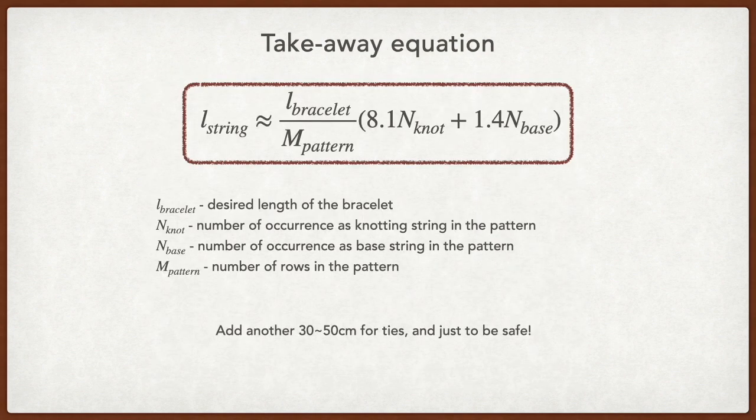To summarize, here I'm writing down the equation takeaway message. The length of a string can be estimated as the length of the bracelet divided by the number of rows in the pattern and multiplied by (8.1 times N_knot plus 1.4 times N_base). N_knot and N_base are the number of knots this string made in a pattern as the knotting or base string. This is the length of the string that goes into the knots. You'll also need to add another 30 to 50cm for the ties and just to be on the safe side.